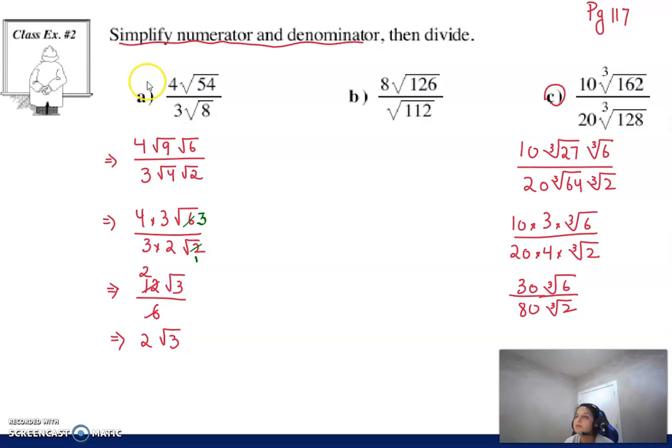And we use the same rules. These will reduce each other, so it will be both divided by 10, leaving me with 3 over 8. And this reduces down to 1 and this becomes a 3. So our final answer is 3 over 8 cube root of 3.